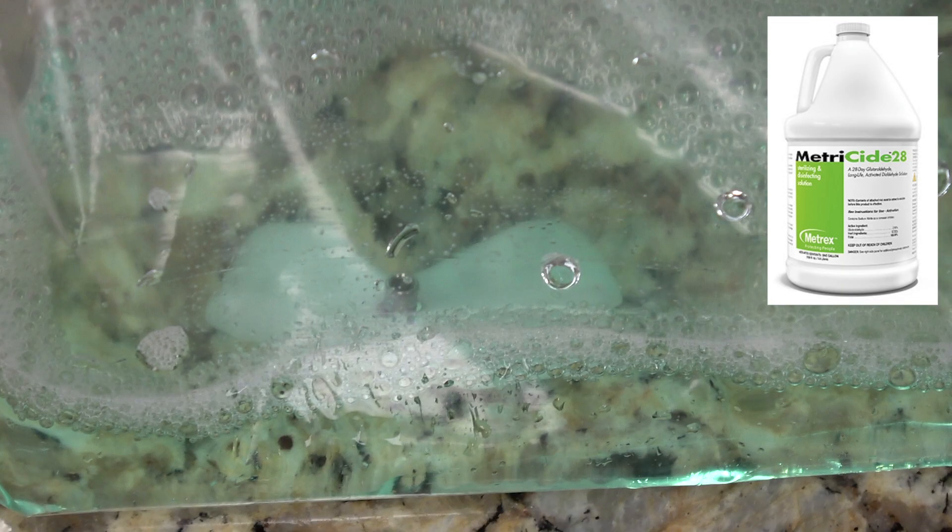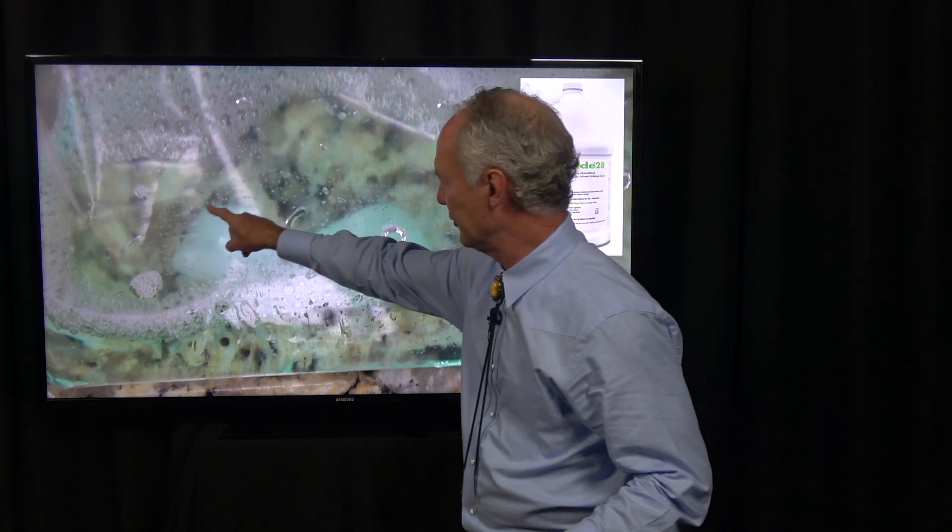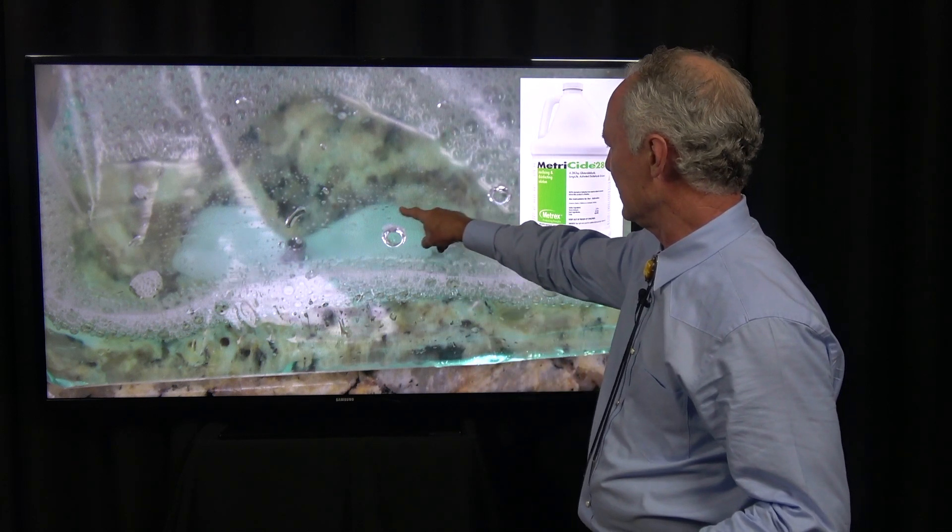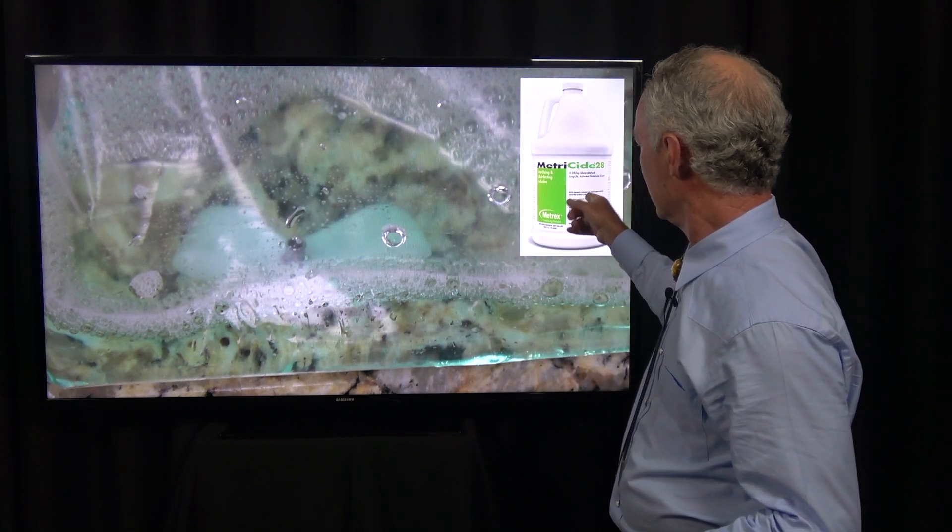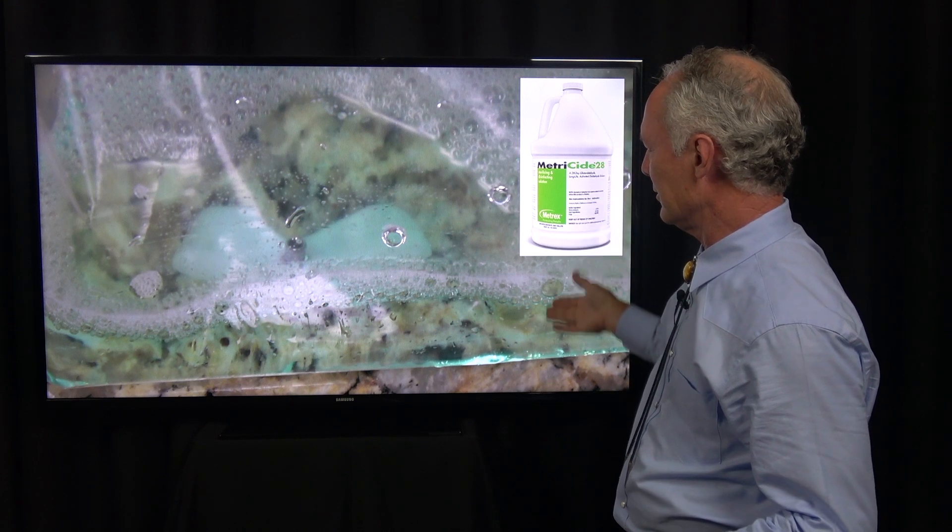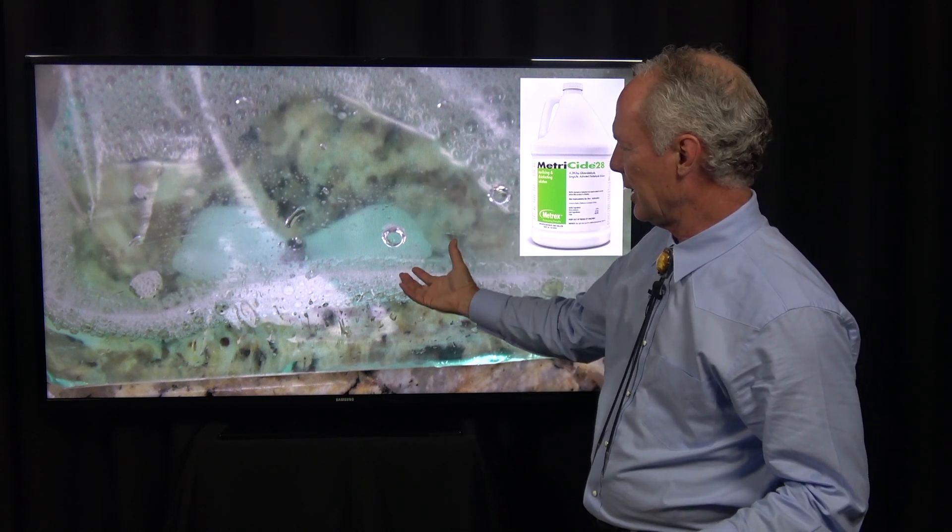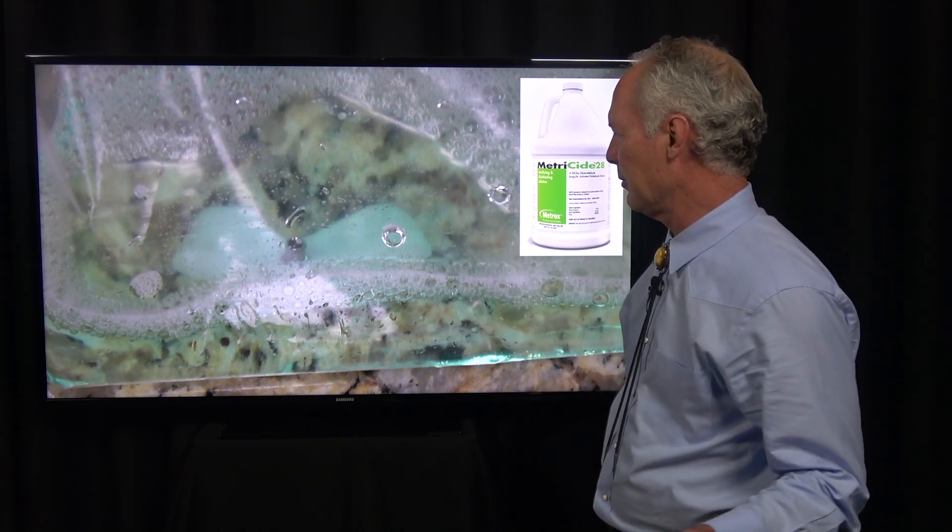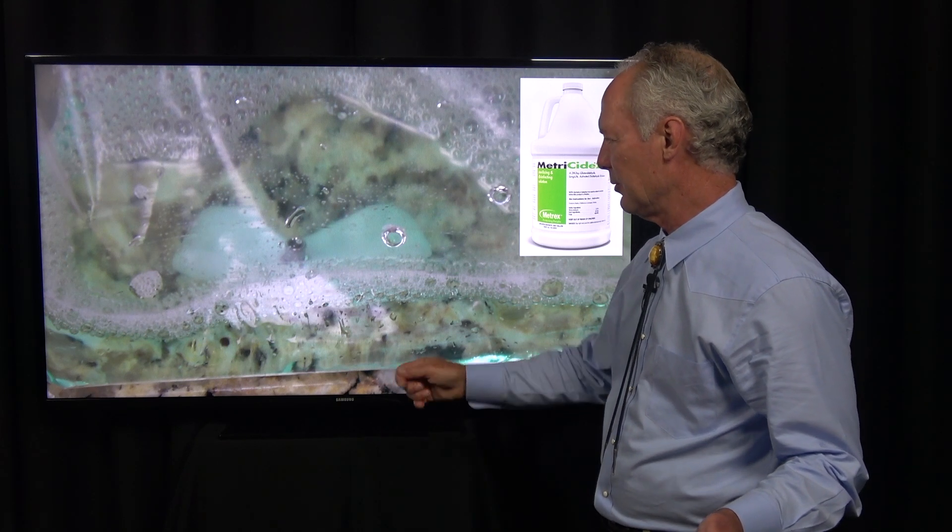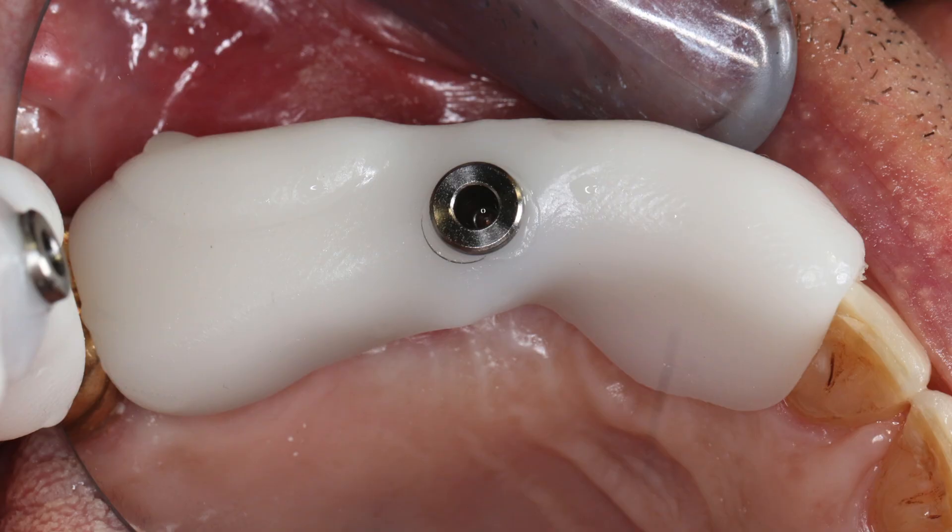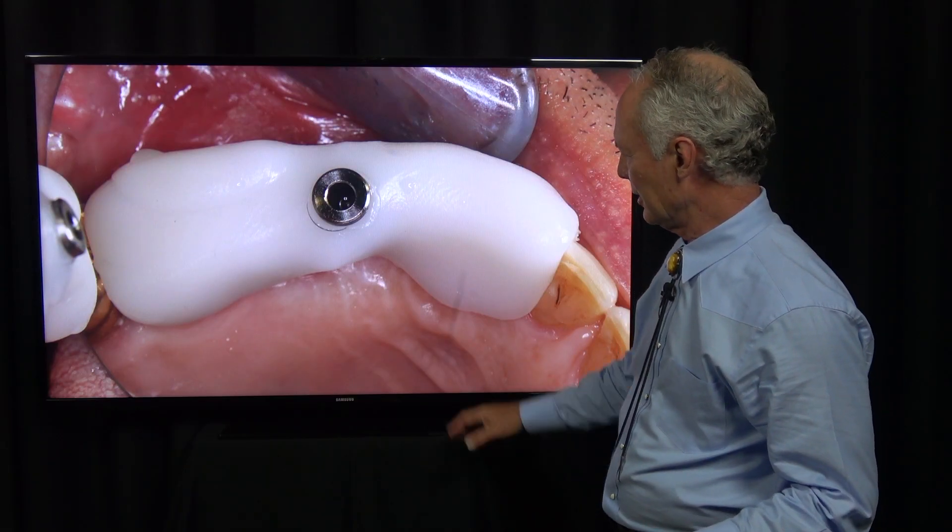Then you're going to disinfect the stent with whatever you use. We put it in a plastic bag for the appropriate time, then rinse it well. Put it in a cup of water and rinse the sterilizing solution off.